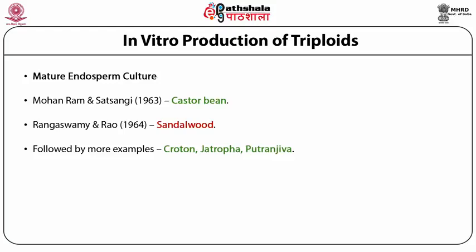An important factor necessary for the proliferation of mature endosperm is the embryo factor, which means that initially, when you want to get a tissue culture of mature endosperm, you have to culture the entire decoded seed which contains the embryo. And after some time, when the endosperm has started to proliferate, the embryo can be removed. This suggests that the embryo provides certain factors necessary to induce divisions in the mature cells of the endosperm.